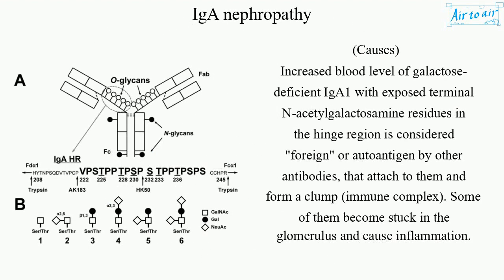Causes. Increased blood level of galactose-deficient IgA1 with exposed terminal N-acetylgalactosamine residues in the hinge region is considered foreign or autoantigen by other antibodies, that attach to them and form a clump — an immune complex. Some of them become stuck in the glomerulus and cause inflammation.